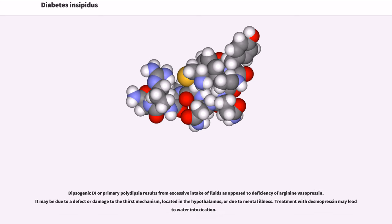Dipsogenic DI or primary polydipsia results from excessive intake of fluids as opposed to deficiency of arginine vasopressin. It may be due to a defect or damage to the thirst mechanism, located in the hypothalamus, or due to mental illness. Treatment with desmopressin may lead to water intoxication.